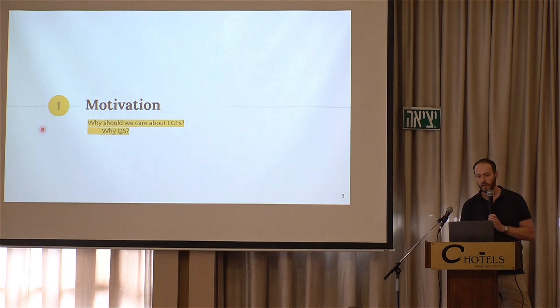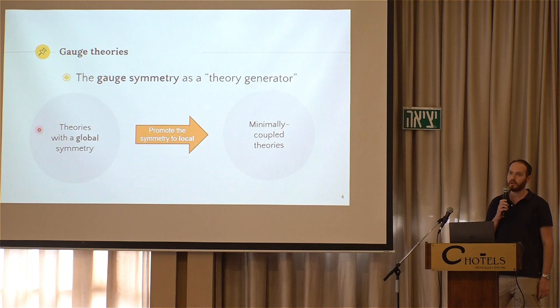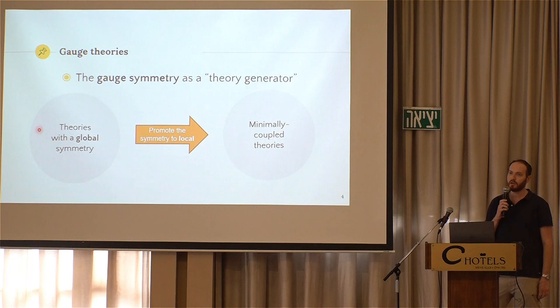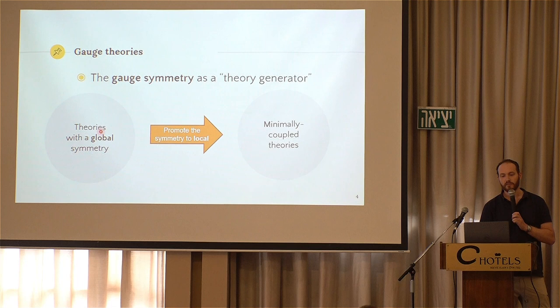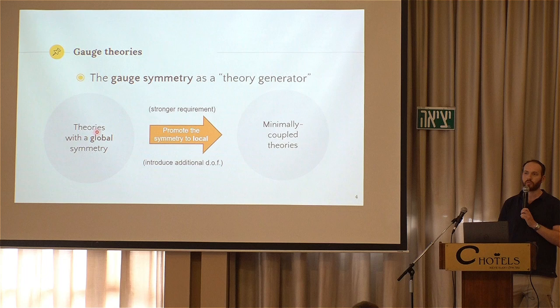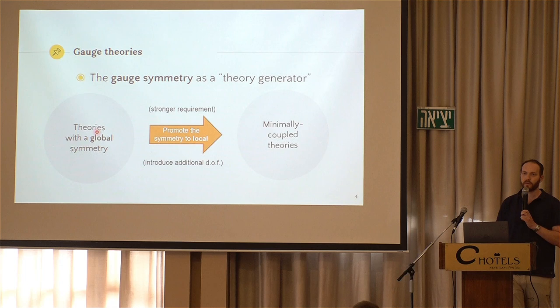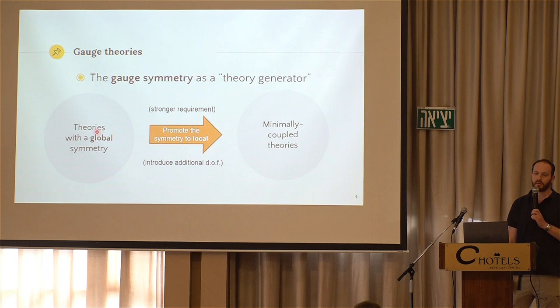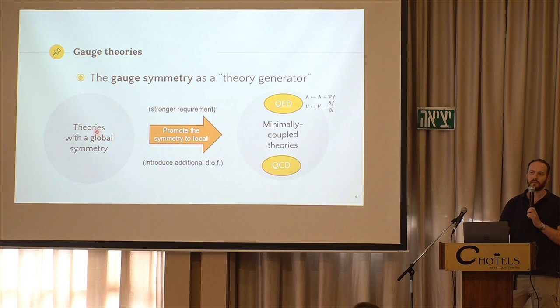So I like to think about the gauge symmetry as this theory-generating protocol. Imagine you have some theory with a global symmetry, like charge conservation. The protocol tells you to promote this symmetry to be a local symmetry, which is a stronger requirement. It forces you to introduce additional degrees of freedom that we call the gauge field degrees of freedom. What you get by this procedure is a minimally coupled theory. What I mean by minimally coupled theory is a theory that has matter particles like electrons that are interacting only indirectly through the gauge field, interacting via the photons, for example.